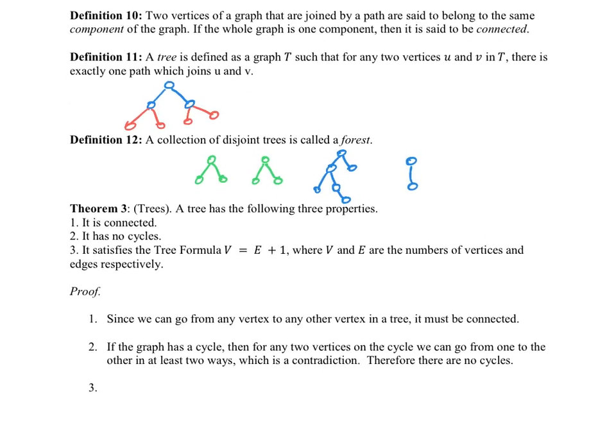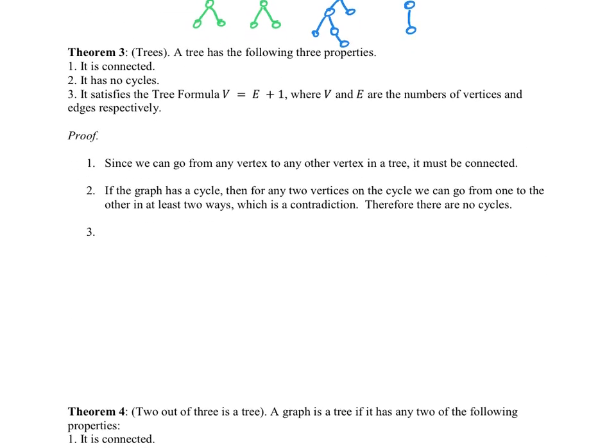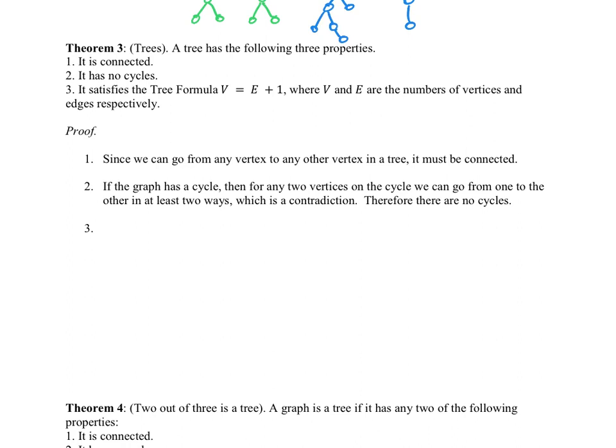Alright, so we're ready for our first discovery about trees. There are three properties of trees that we should discuss. Building on the definition that we just talked about, we said a tree has exactly one path between every pair of vertices. So that means directly that it must be connected, because we can travel along that path. So since we can go from any vertex to any other vertex through that path, it must be connected.